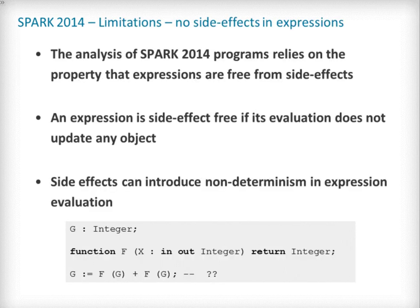The Spark language does not support side effects in expressions. That is, evaluating a Spark expression cannot update any object. This limitation is necessary to avoid unpredictable behavior depending on the order of evaluation, parameter passing mechanism, or compiler optimizations. The expression shown here, involving G, is non-deterministic due to the order in which the two calls to F are evaluated, and is therefore not legal Spark.